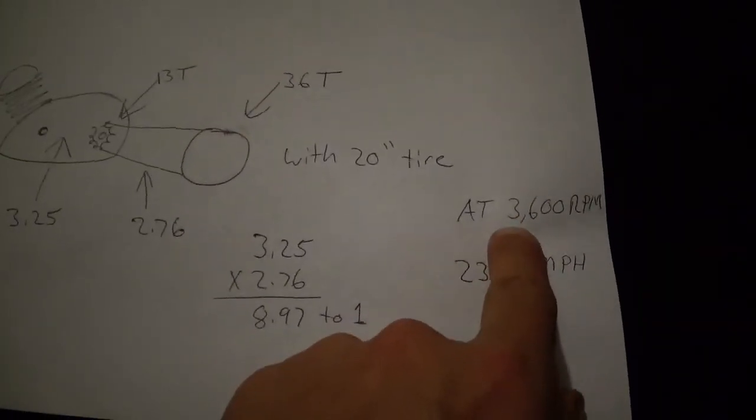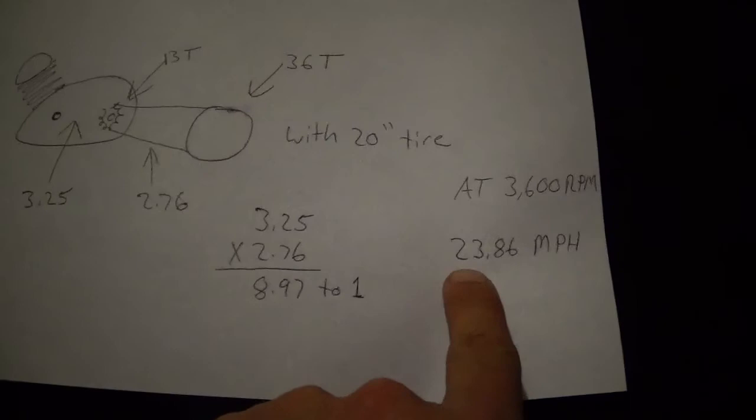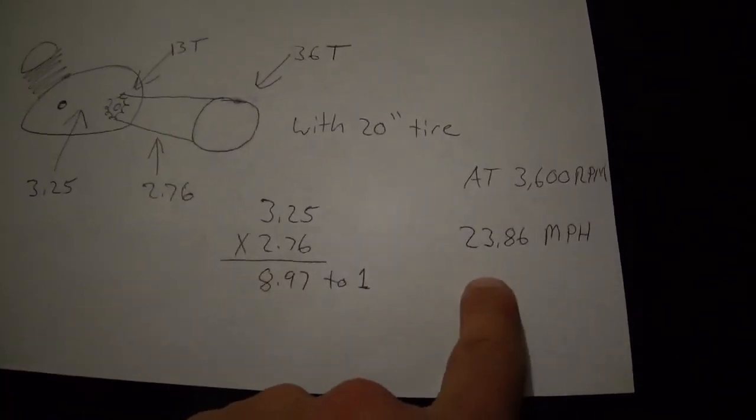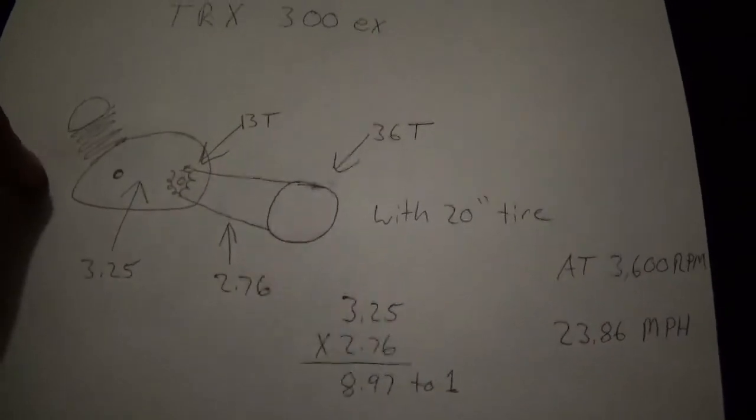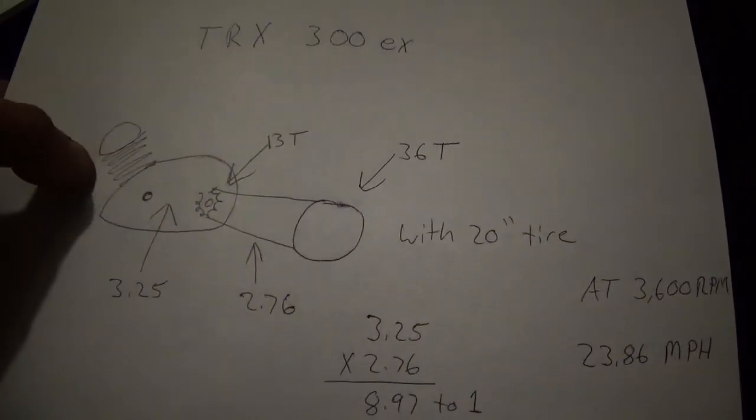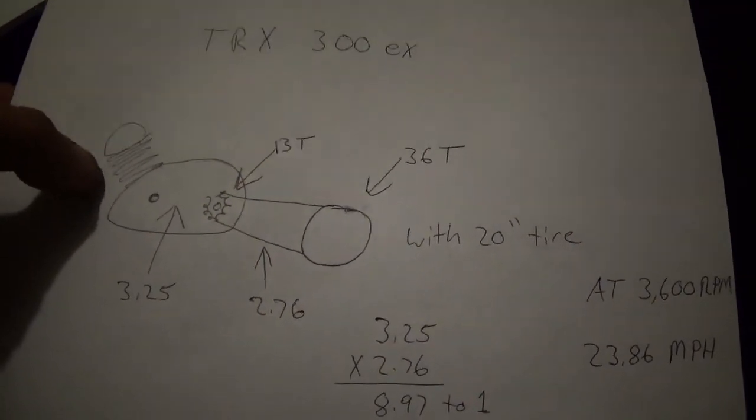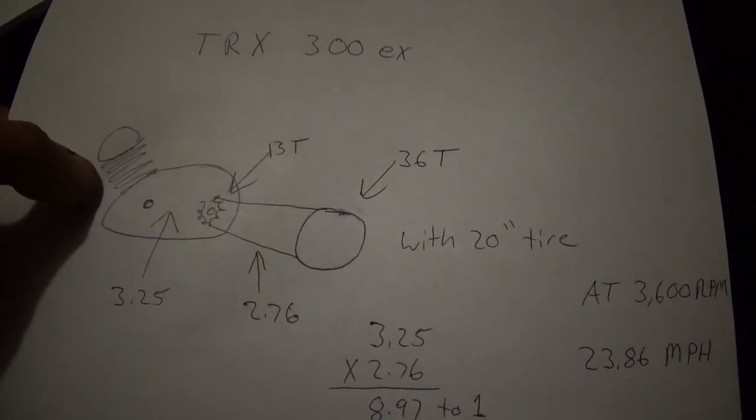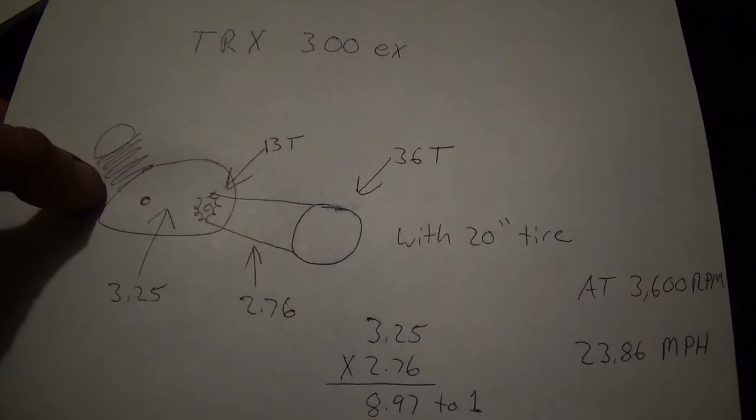So you figure that up based on 3600 RPMs. This machine goes 23.86 miles per hour. Now the thing about this engine here, it is capable of running probably six, maybe even seven thousand RPMs and not come apart.